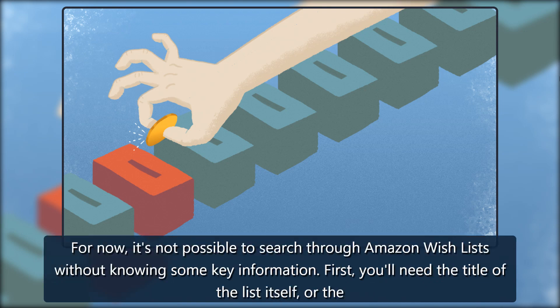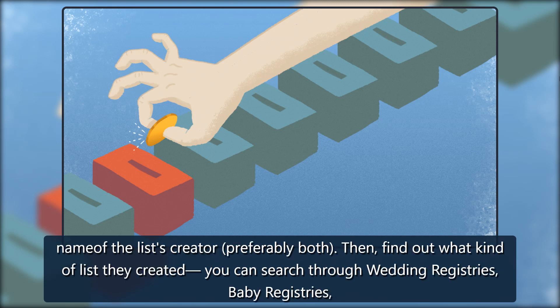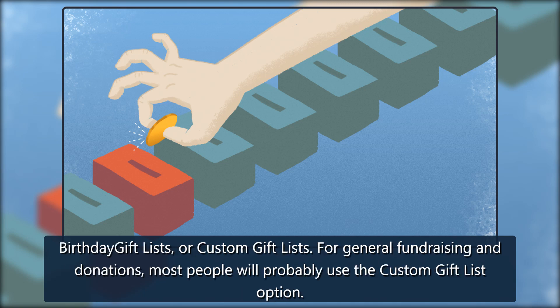For now, it's not possible to search through Amazon wish lists without knowing some key information. First, you will need the title of the list itself, or the name of the list's creator, preferably both. Then, find out what kind of list they created — you can search through wedding registries, baby registries, birthday gift lists, or custom gift lists. For general fundraising and donations, most people will probably use the custom gift list option.